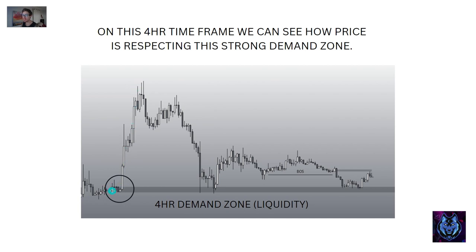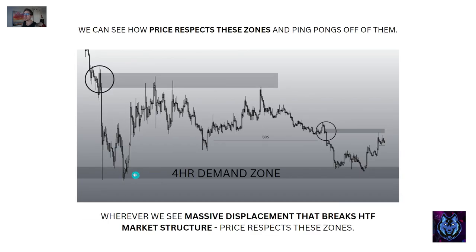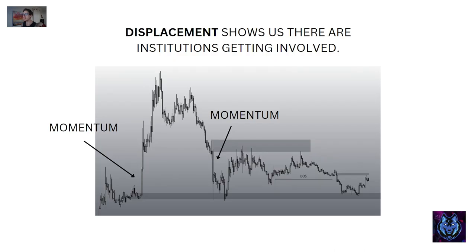On this four-hour time frame we can see this massive four-hour displacement. The banks got in at this perfect indecision candle, and there was an explosion of price. This becomes a very valid four-hour demand zone. Price tapped into it, bounced, tapped into it again, and is about to bounce again. Also over here we had a massive displacement that left behind an indecision candle — price respects this zone perfectly. Whenever we see massive displacement that breaks higher time frame market structure, price respects these zones.